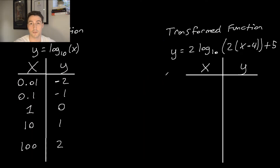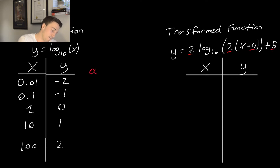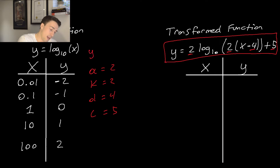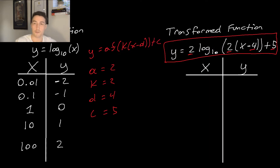Now we're going to apply the mapping rule to the logarithmic function. It's important to note all of our transformed variables: a = 2, k = 2, d = 4, and c = 5. Once we have all that and confirm it's of the form y = a·f(kx − d) + c, we can use the mapping rule to find the transformed points, then connect those points to get the graph.